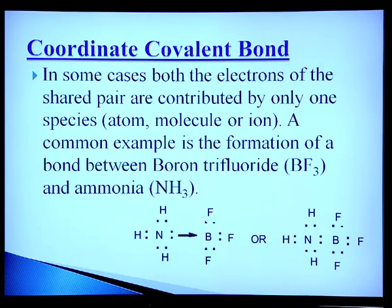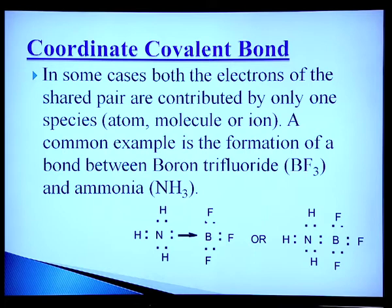Another category is the coordinate covalent bond. In some cases, both electrons of the shared pair are contributed by only one species — atom, molecule, or ion. A common example is the formation of a bond between boron trifluoride (BF₃) and ammonia: nitrogen donates a lone pair of electrons to BF₃ to give the NH₃·BF₃ addition compound.